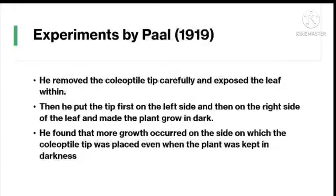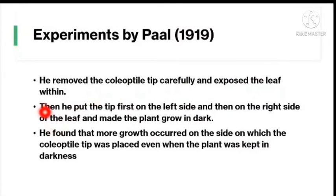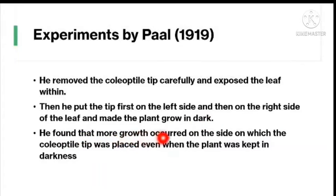Next, experiments by Paal in 1919. He removed the coleoptyle tip carefully and exposed the leaf within, then placed the tip first on the left side and then on the right side of the cut end. He made the plant grow in the dark and found that more growth occurred on the side on which the coleoptyle tip was placed.